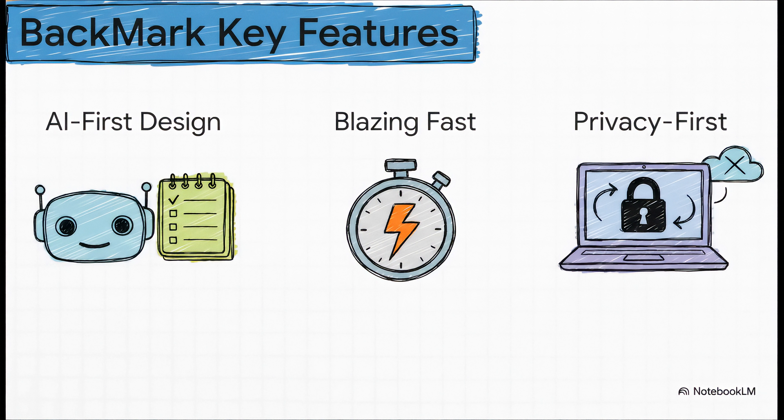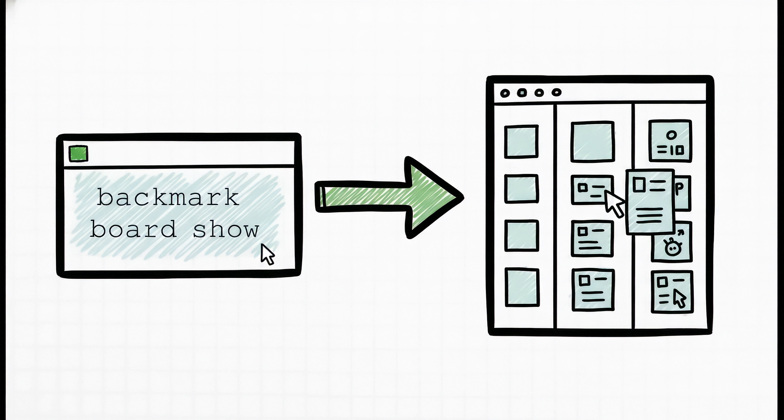So what makes Backmark special? It's designed with specific places for your AI to outline its plans and for you to review them, making working together feel totally natural. It's ridiculously fast — it can handle over a thousand tasks in under 10 milliseconds. But maybe the most important thing: it's 100% offline and local. Your data, your plans, they stay on your machine. And you can forget about clunky web interfaces. With Backmark, you just pop open your terminal and type backmark board show, and a gorgeous, fully interactive Kanban board just appears. It's fast, it's simple, and it's right where you live.